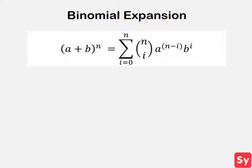This formula gives the binomial expansion of a plus b to the nth power. As you can see, there is a combination n choose i. The formula to calculate this is n factorial over i factorial times n minus i factorial.